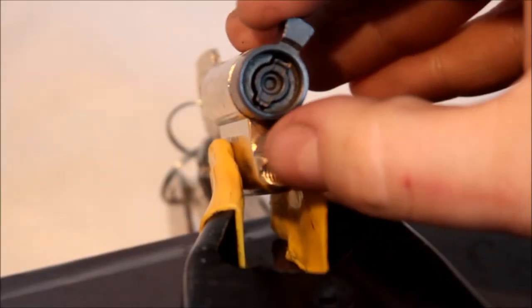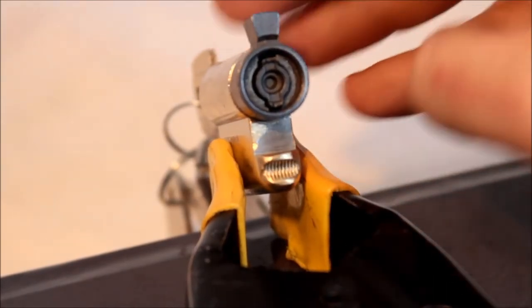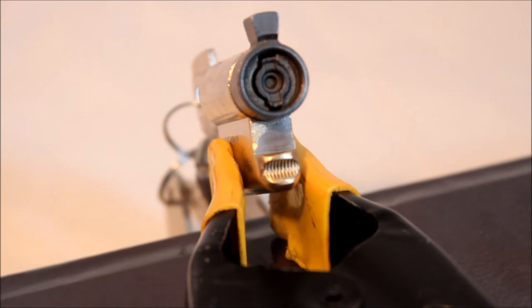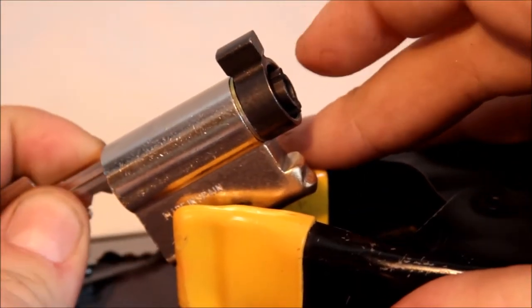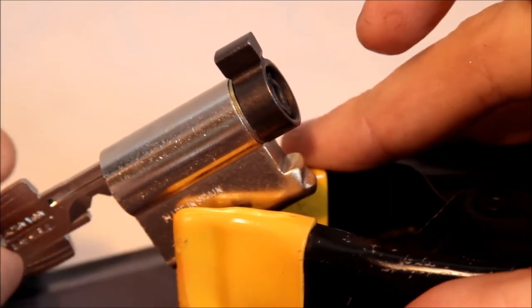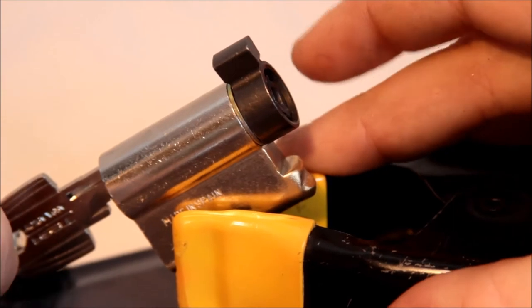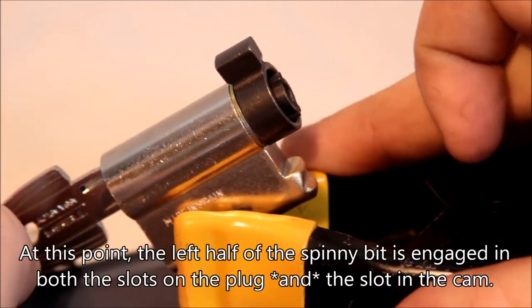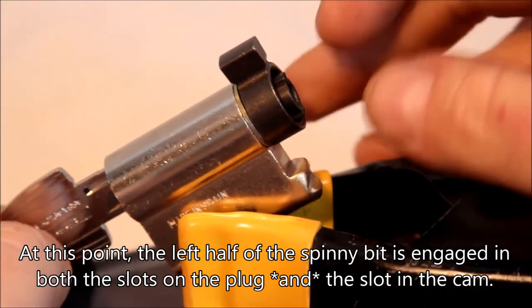So as it is right now, it can spin freely because neither end is engaged, and we don't have this end. But let's say that we want to unlock this side of the door. So when I pull the key out, this thing can go back in, right? Push the key in. That pops out. Hopefully that's visible.